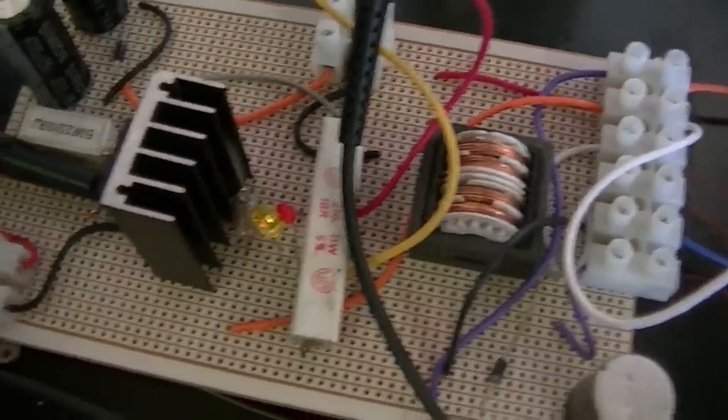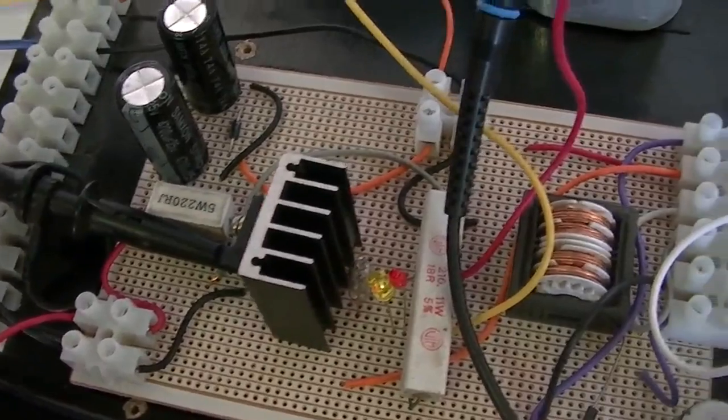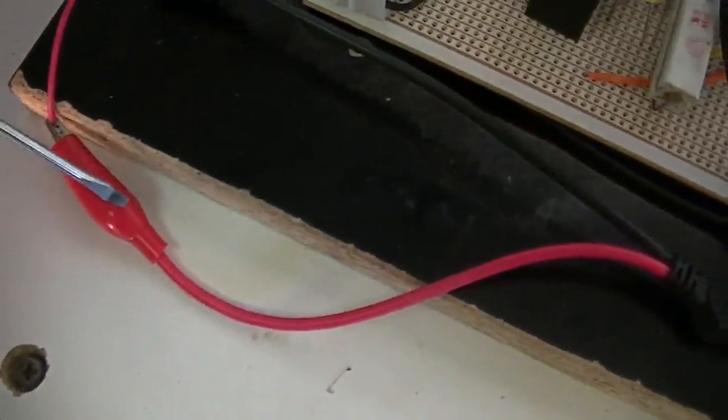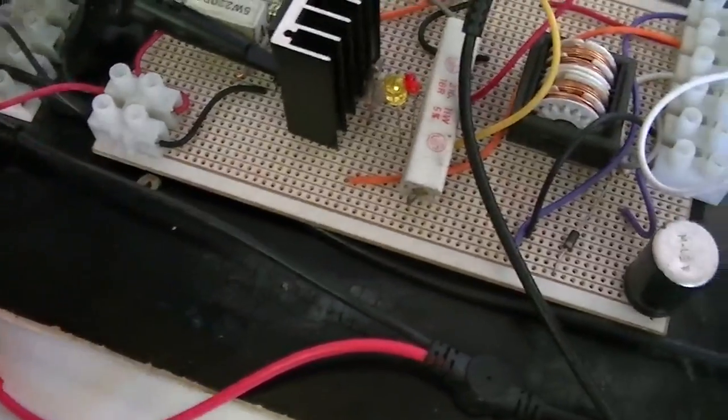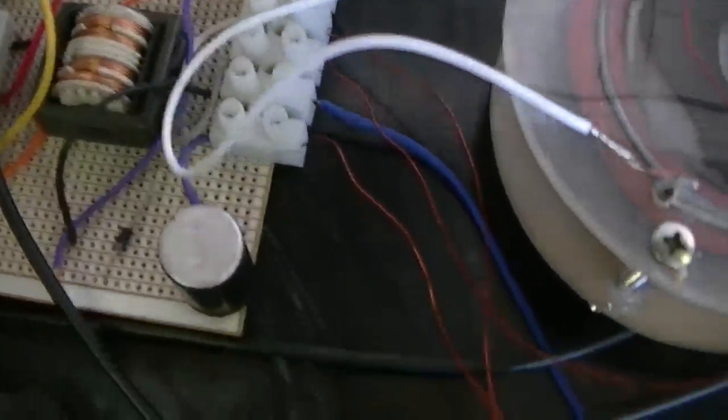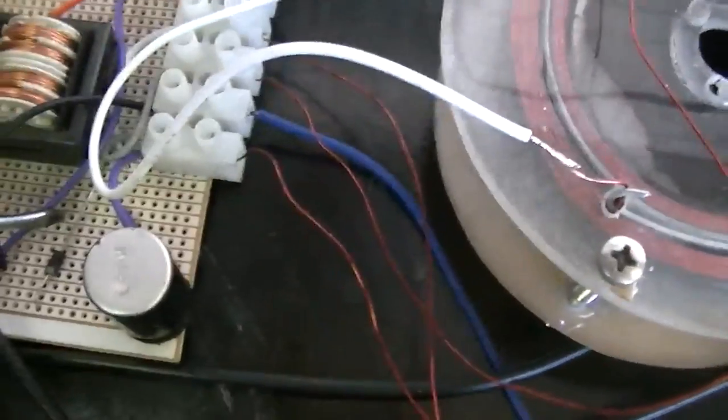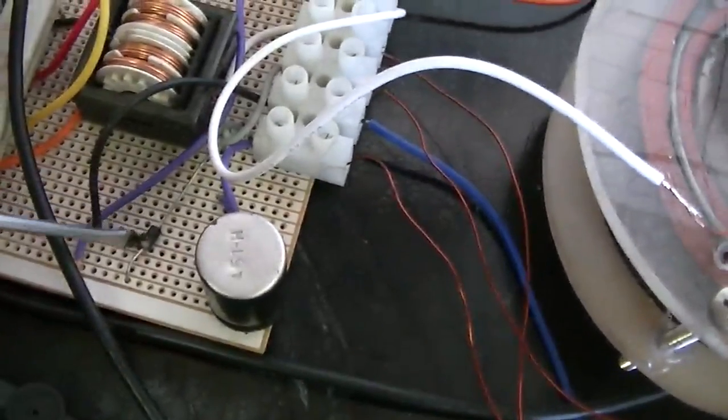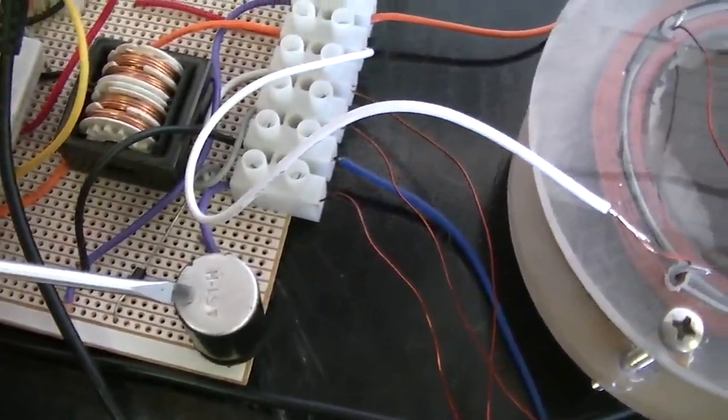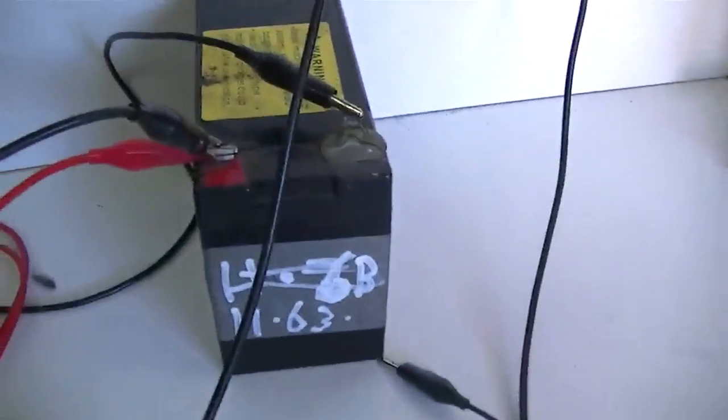The base of the transistor has this 220 ohm resistor on it which of course then comes out to the positive side of our signal generator. The output from the primary coil, the inductive kickback, gets sent through this diode here and into this storage cap. Then from the storage cap we will be going across to a charged battery.